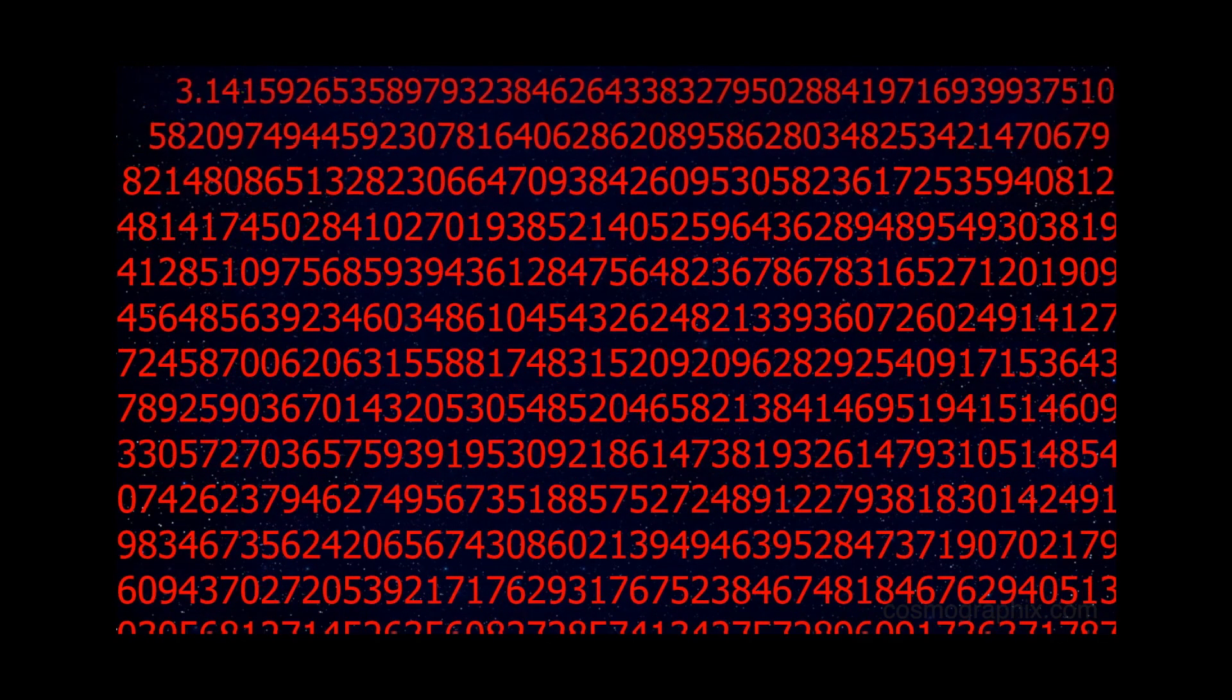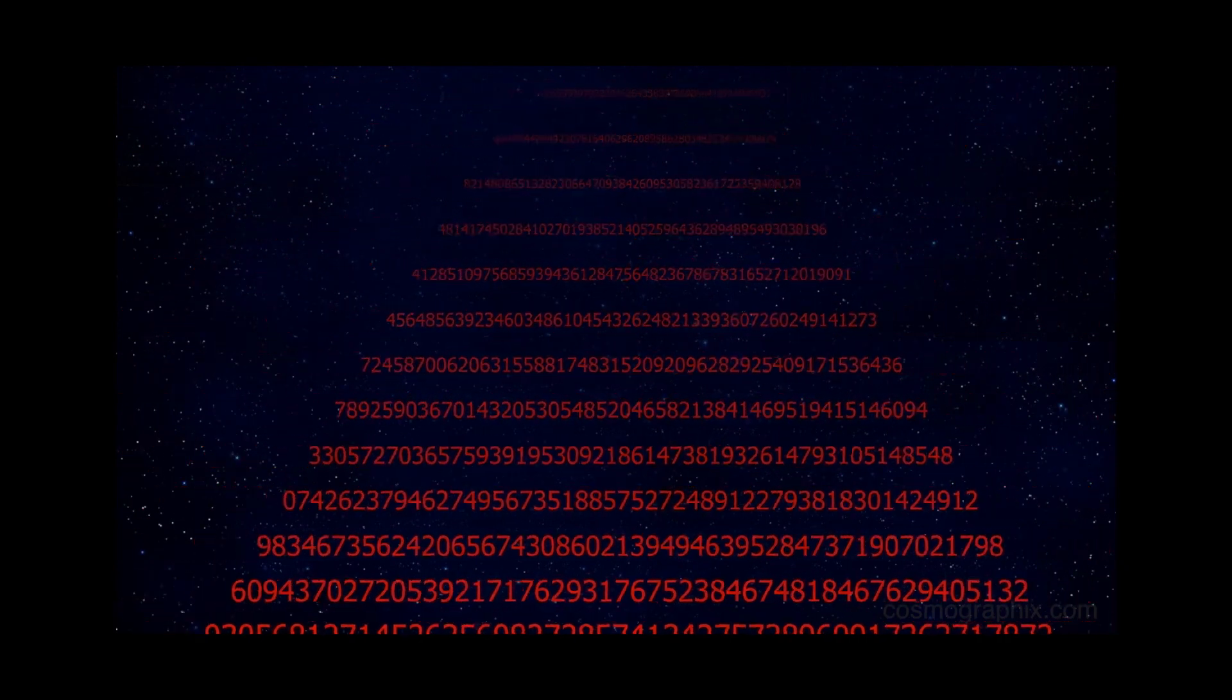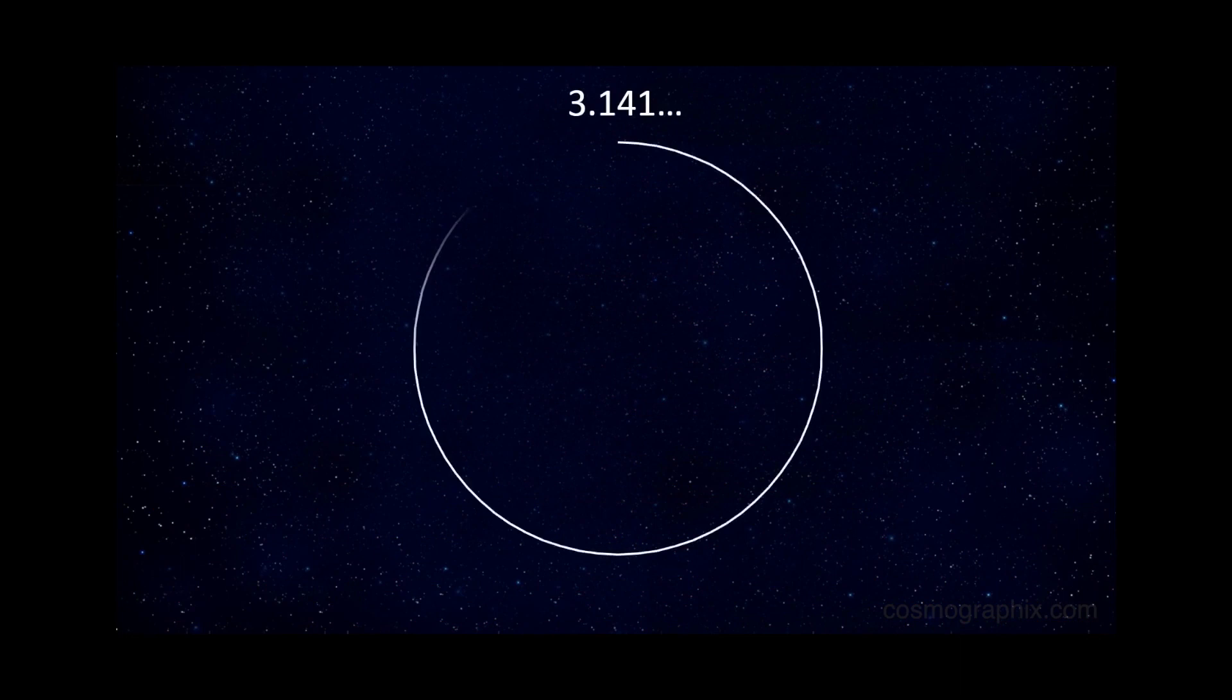It starts at three, then there's a decimal point, and it goes on to say 3.14159, but then the digits go on forever without repeating. Modern computers have calculated its value out to billions of places, but the digits of pi never end.